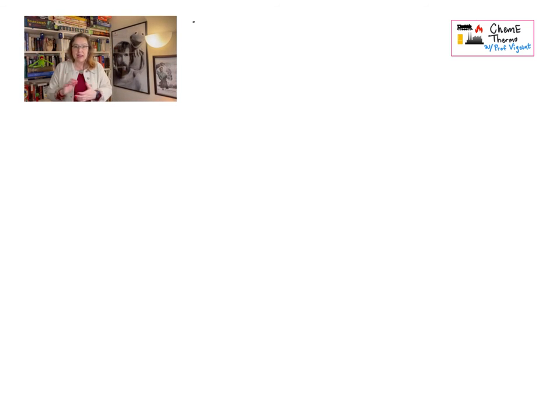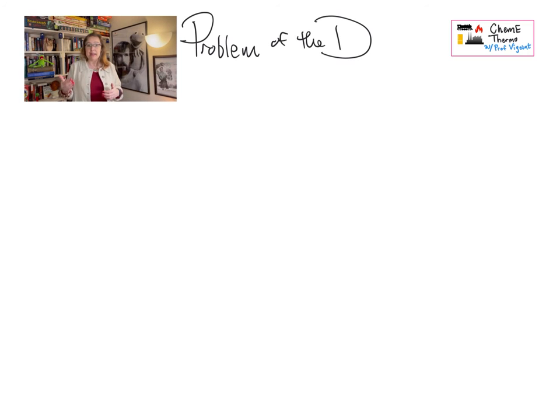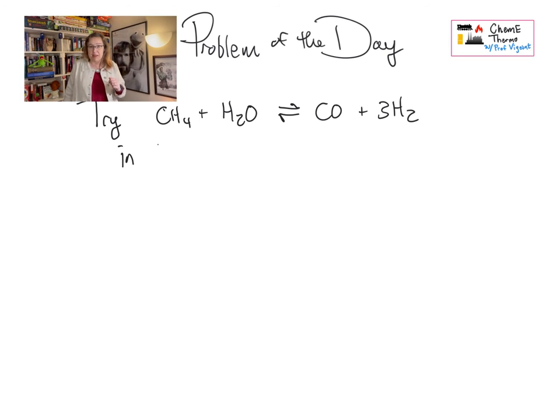Our problem of the day is to calculate adiabatic temperature rise for a reactor running the steam reformation of methane in HYSYS. Recall that at low temperatures this reaction proceeds in the opposite direction. Pick an initial starting temperature where you are reasonably confident the reaction will proceed in the forward direction, then ask HYSYS to let that go and see what the adiabatic temperature change is.